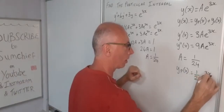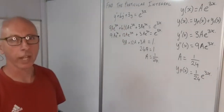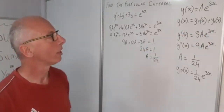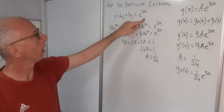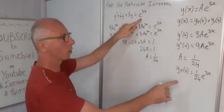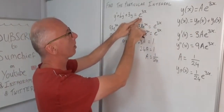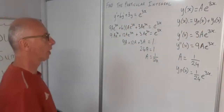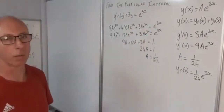The particular integral is taken care of. Now we find the complementary function. For the complementary function, we turn this into a homogeneous linear differential equation — we set the right-hand side to zero, ignoring the e^(3x) since we've already solved that part. That zero will then be added to the particular integral to give us our full general solution.